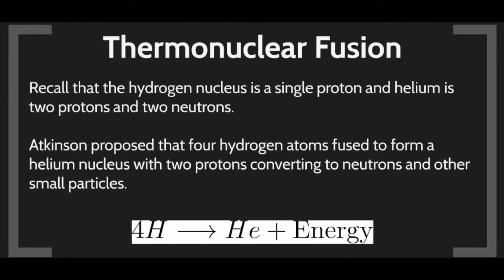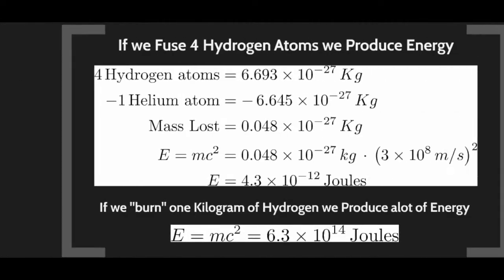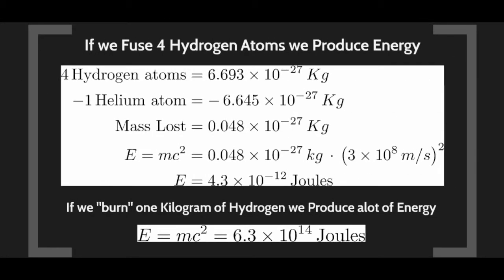This hydrogen burning is a special case of what we call thermonuclear fusion. A hydrogen nucleus is just a single proton, and helium is two protons and two neutrons. What Atkinson proposed was that we could take four hydrogen nuclei, put them together to form helium, plus some extra energy, because the mass of helium is less than the mass of the four hydrogen nuclei.